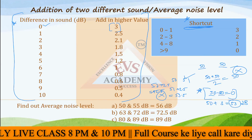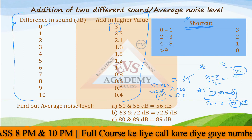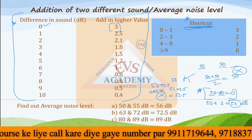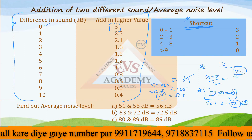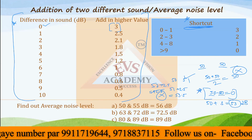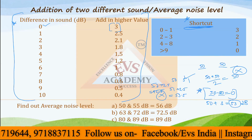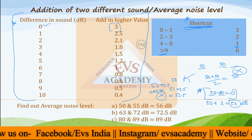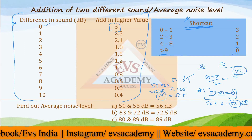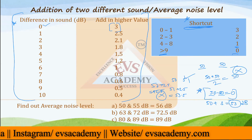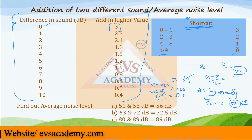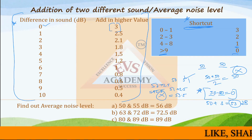If you have difficulty remembering the full table, you can use the shortcut: if the difference is between 0 to 1, add 3; if the difference is between 2 to 3, add 2; if the difference is in the range of 4 to 8, add only 1 to the higher noise level; and if the difference is more than 9, add 0. These shortcut values are approximated.